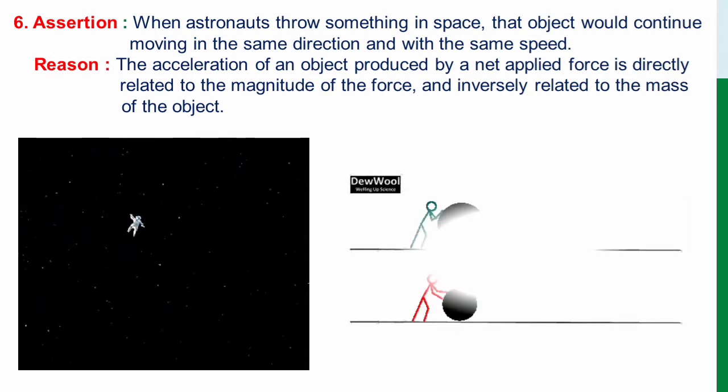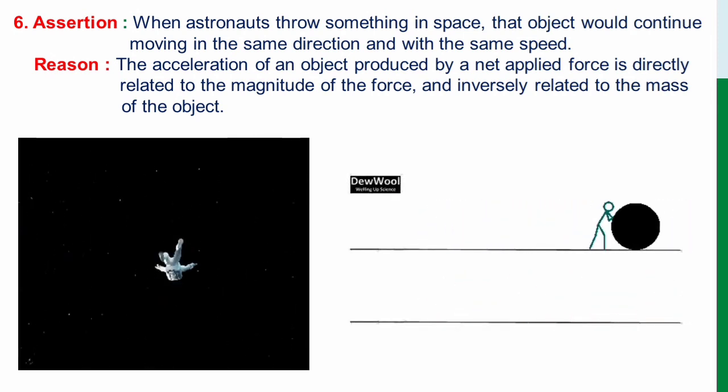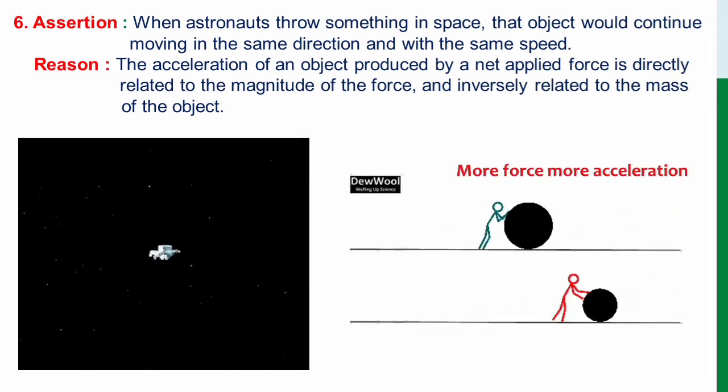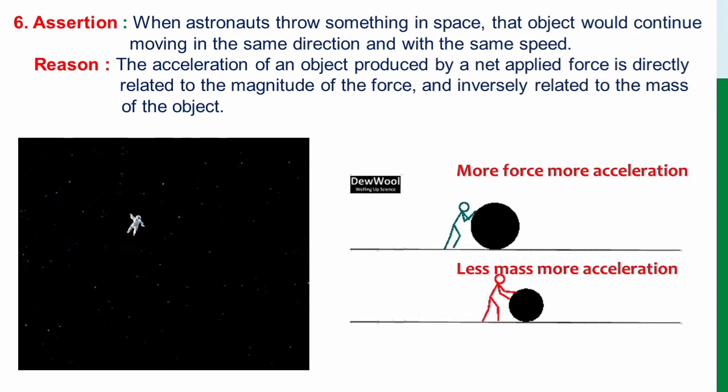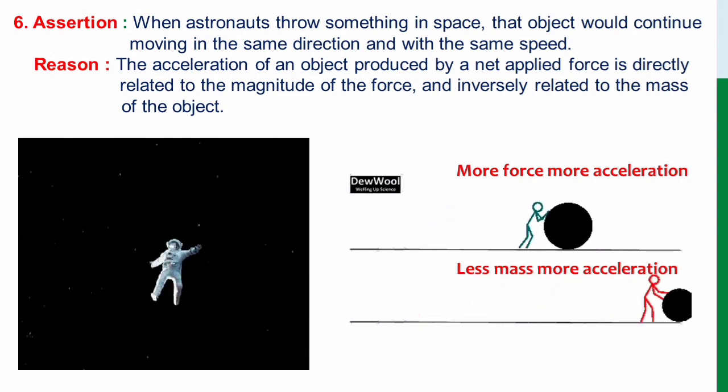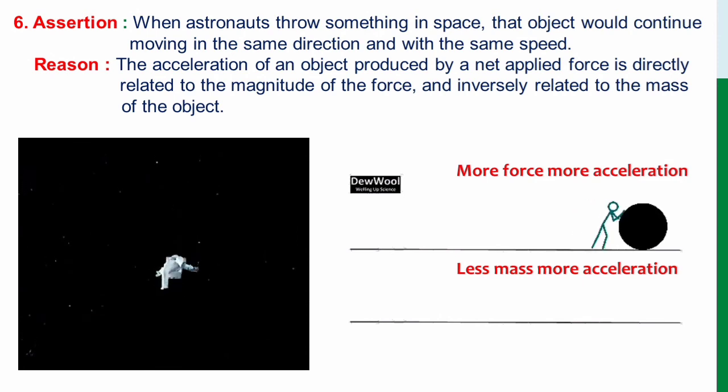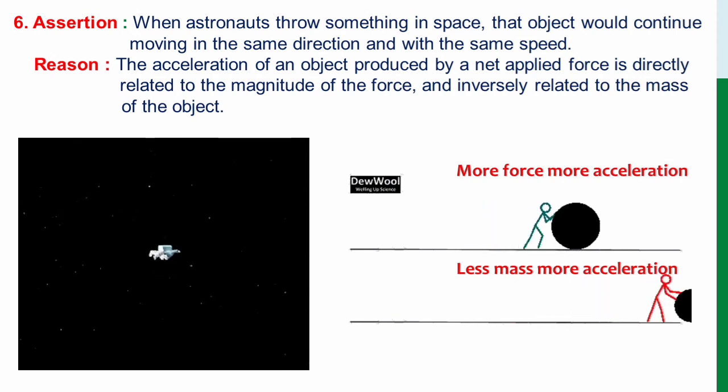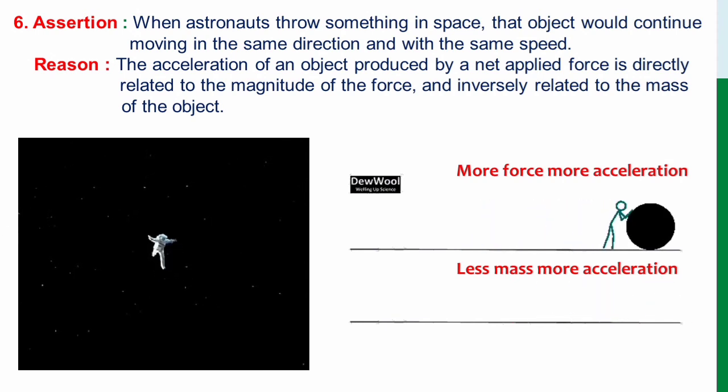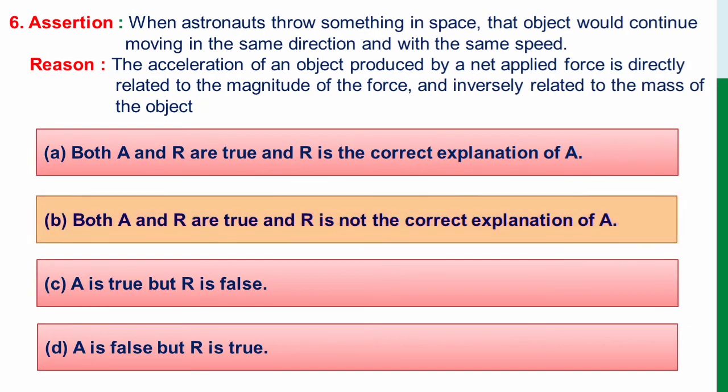In the reason, we can understand that acceleration of an object is directly related to the magnitude of the force. We have already discussed that if you give more force, the object gets more acceleration. Also, if you compare the acceleration for the same force with a lighter and heavier object, the lighter object gets more acceleration for the same force. This means that reason is also true. But does it give an explanation for the first statement? No.